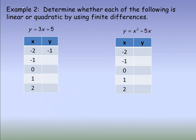In the second example, we're given a couple of relations and we're going to use a table of values to determine whether they are quadratic or linear, using finite differences — that is, the differences between consecutive y values. The first equation is y equals 3x plus 5. If you know anything about equations, you can tell that one's going to be linear — it's in the form y equals mx plus b. But I want to demonstrate using a table of values how you could show that as well.